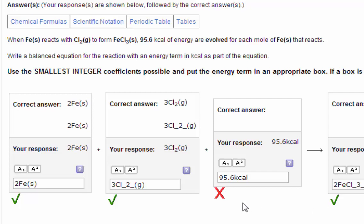The other problem besides the location is the value you entered. For each mole of iron, 95.6 kilocalories are evolved. Well, in the balanced equation, there are two moles of iron.